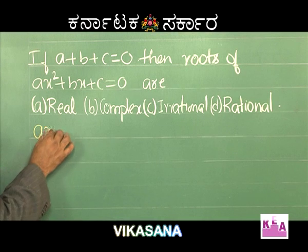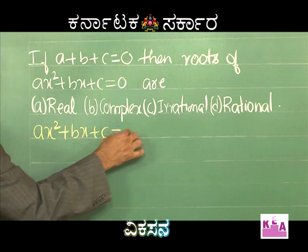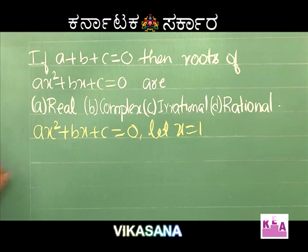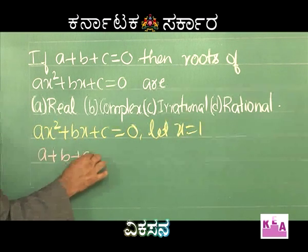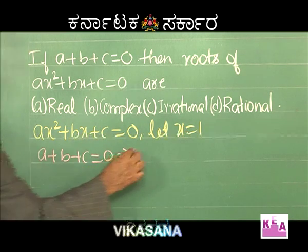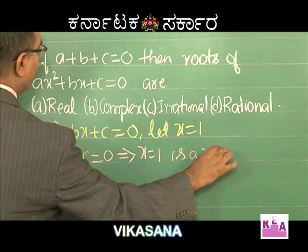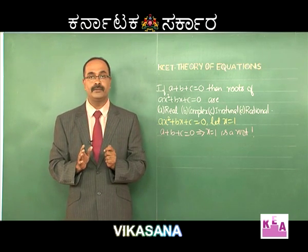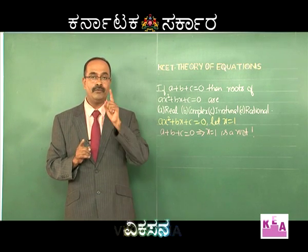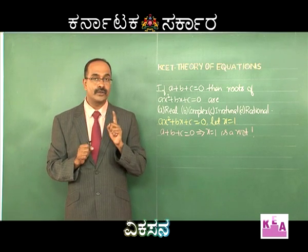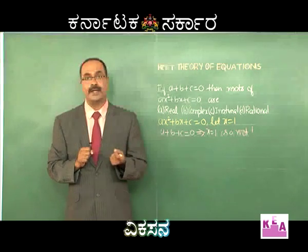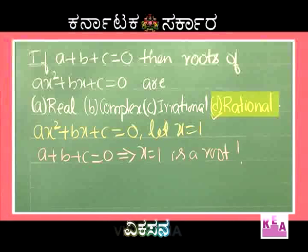If we put x = 1 into ax² + bx + c, we get a + b + c = 0. This implies x = 1 is a root of the equation. So one root is clearly rational. If one root is rational, the other root must also be rational — because if one root were irrational, the other would be its irrational conjugate. Therefore both roots are rational. Option D is correct. This is the simplest shortcut for this problem.